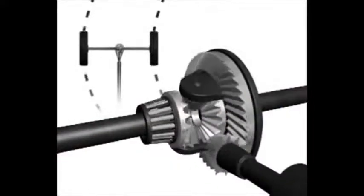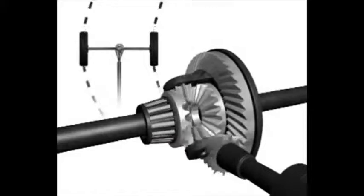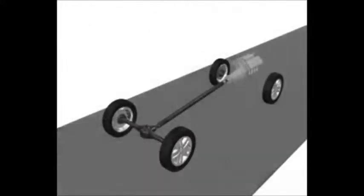In order to allow the wheels to turn at different speeds, a differential is used. Power is supplied from the engine via the transmission to a drive shaft, which connects to the differential.